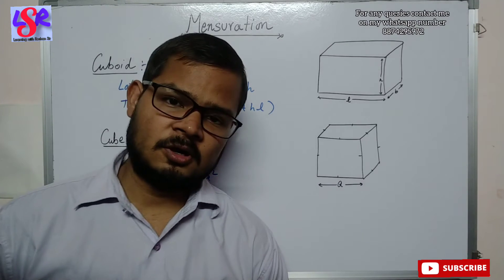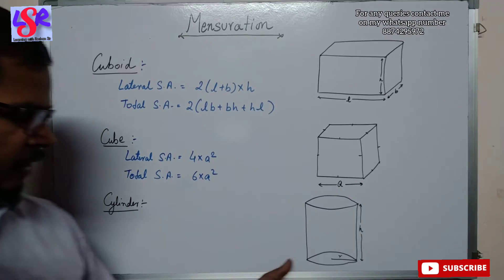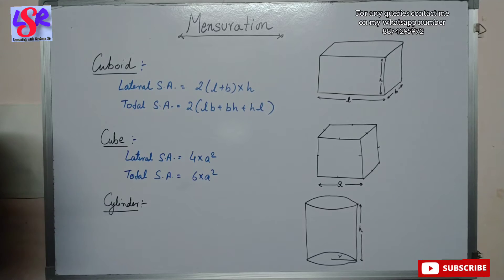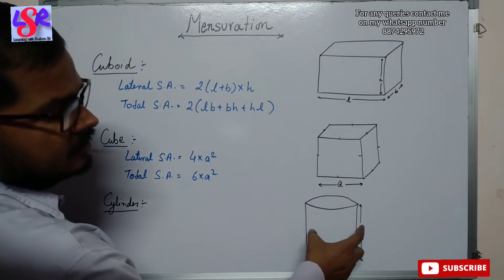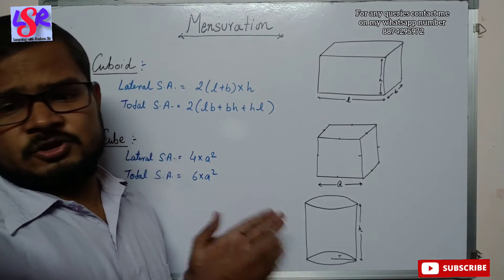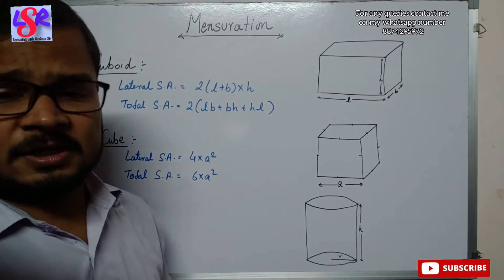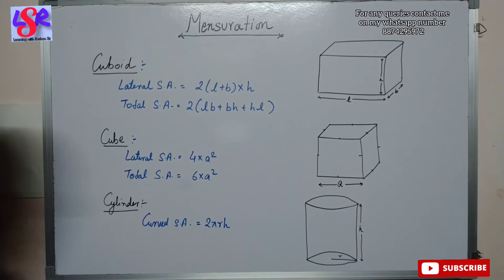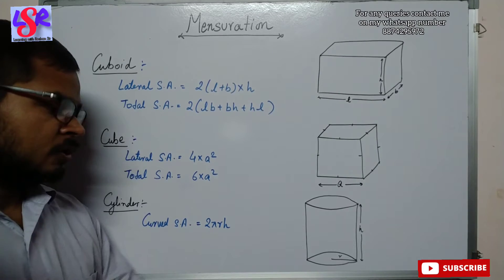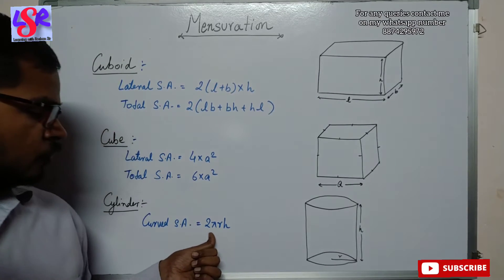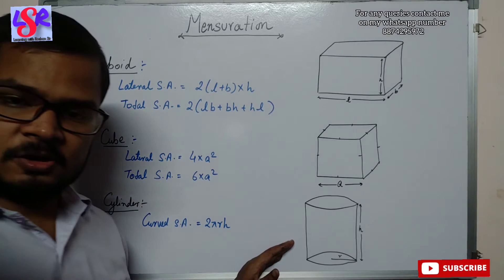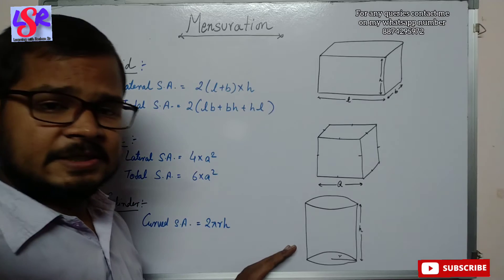The next figure is the cylinder. Here we have a cylinder with radius R and height H. The lateral surface area is called the curved surface area in the case of a cylinder, because the standing part has a curved shape. The curved surface area of a cylinder is 2πRH — the cross-section is a circle, and the circumference of the circle is 2πR, so circumference × height gives the curved surface area.